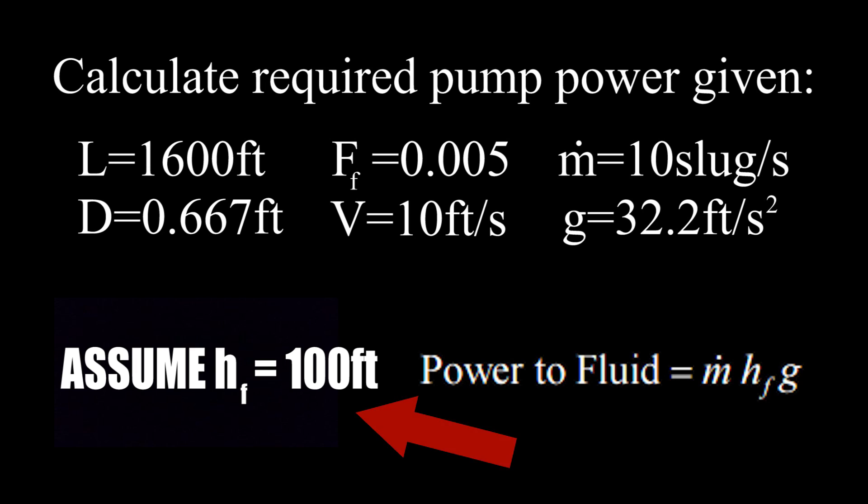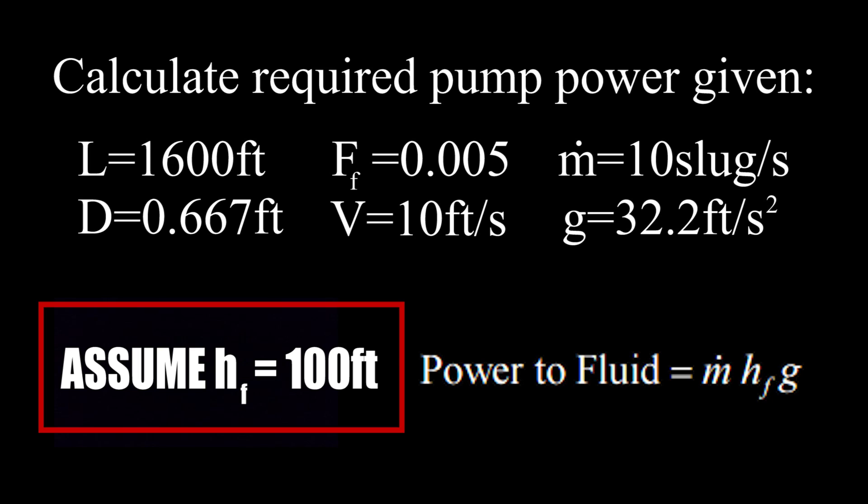Professors will look at this, probably realize that this magical number is a complete fabrication, mark off a few points for that, and continue on grading. Even if this value proves to be way off, chances are this is the only place you'll be penalized. Your final answer will of course be wrong, but only as a result of your royal mistake a few lines up.